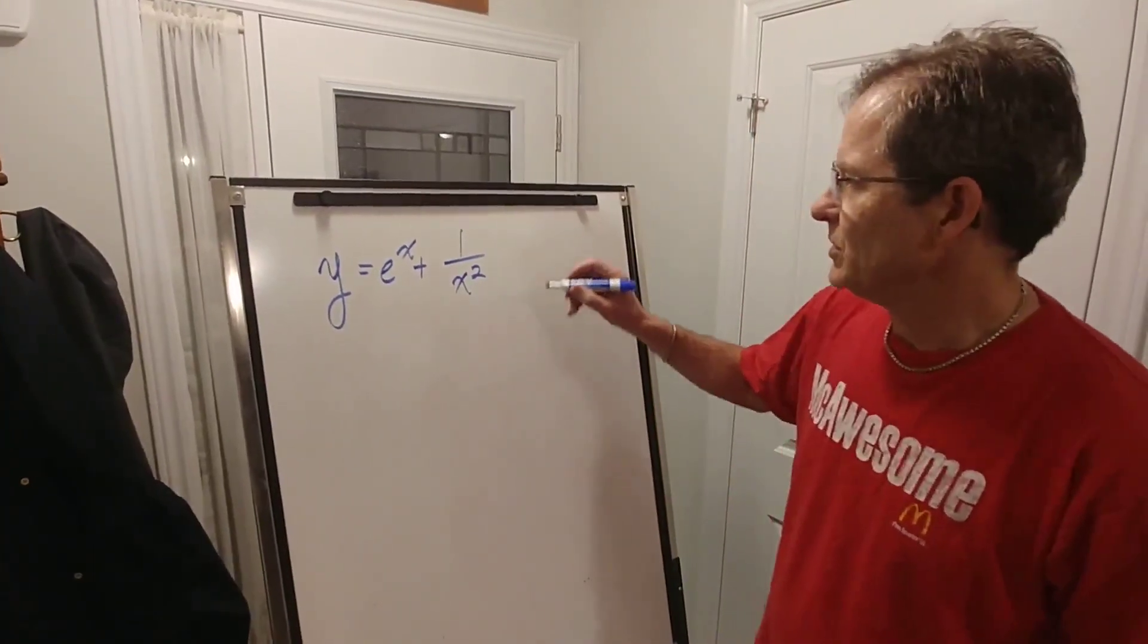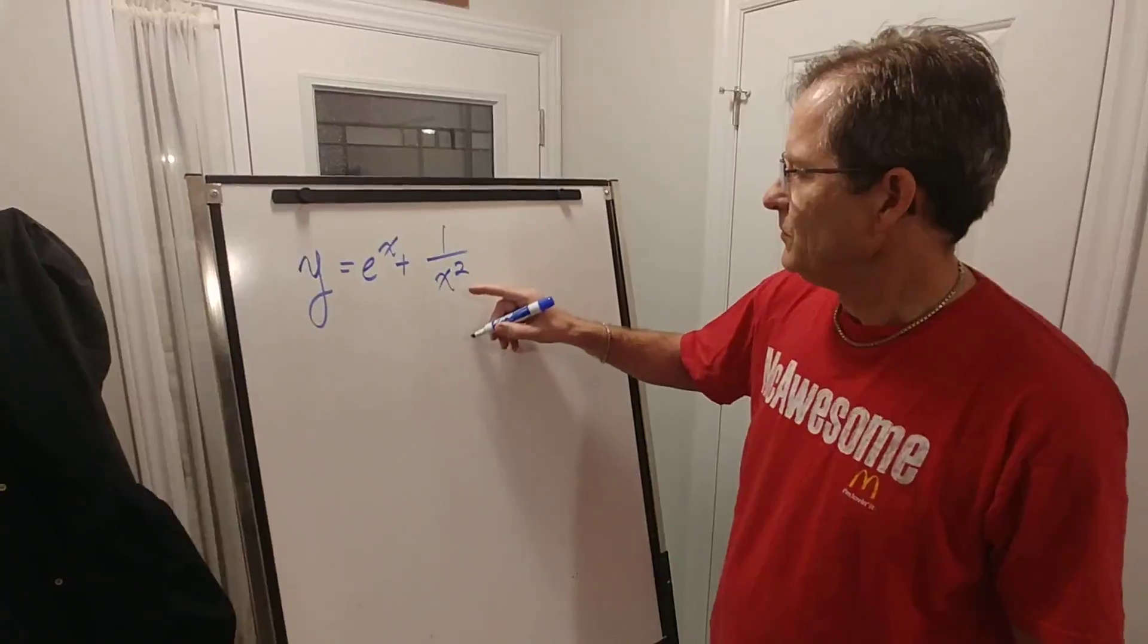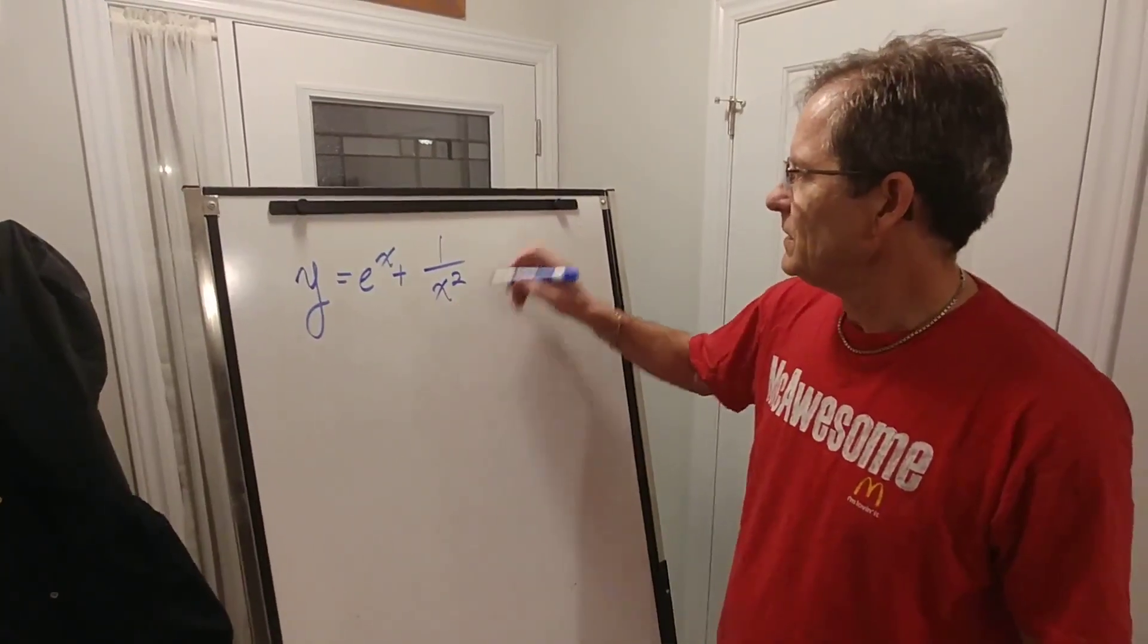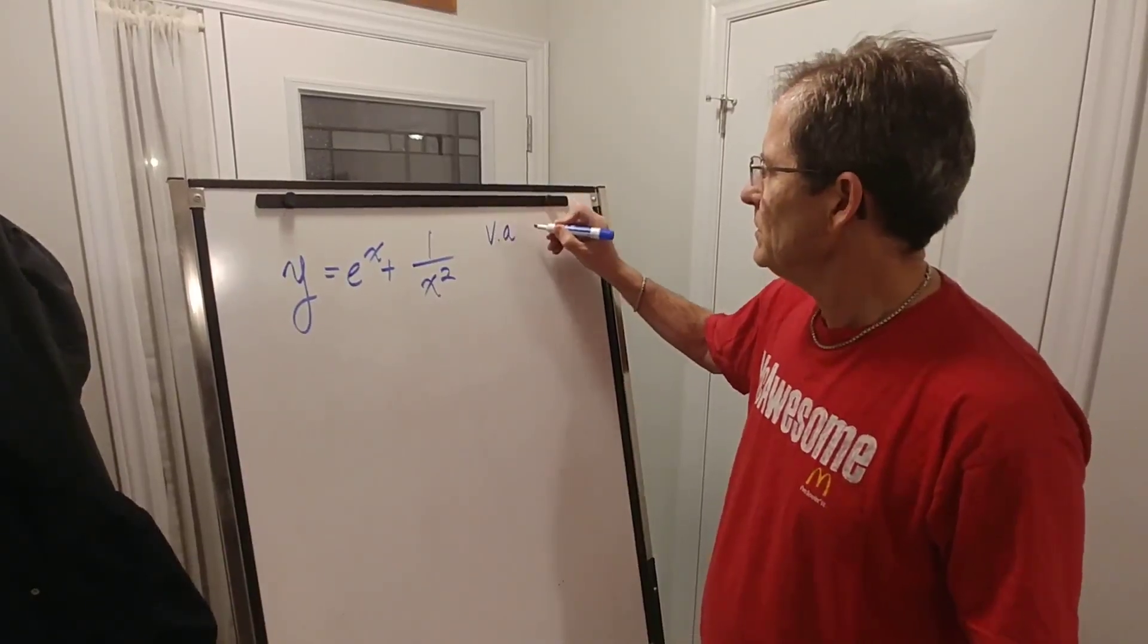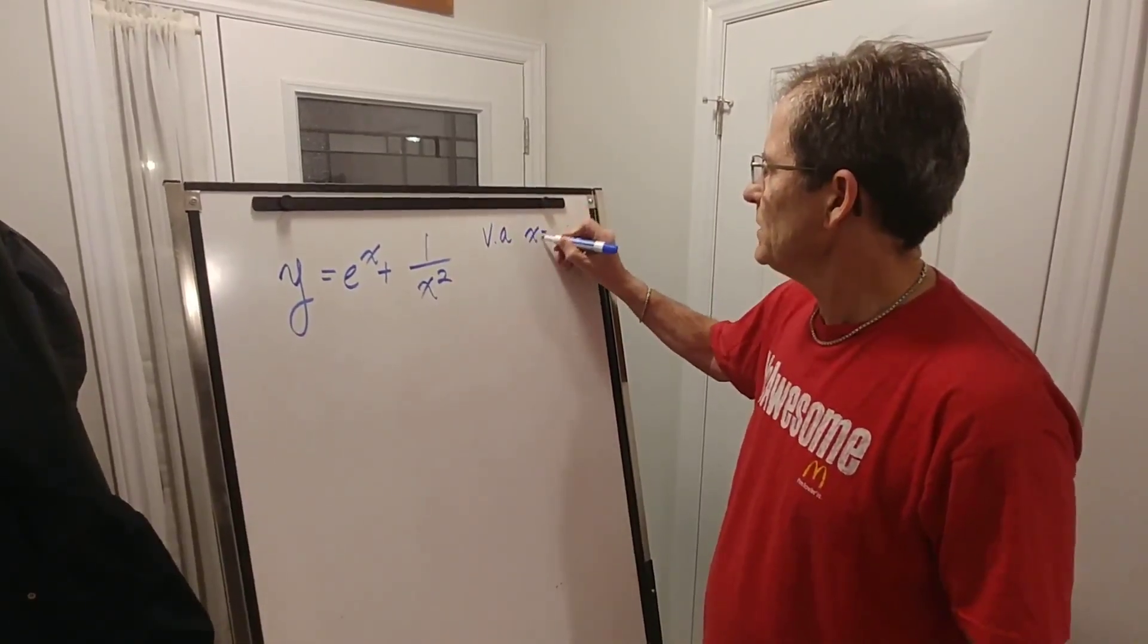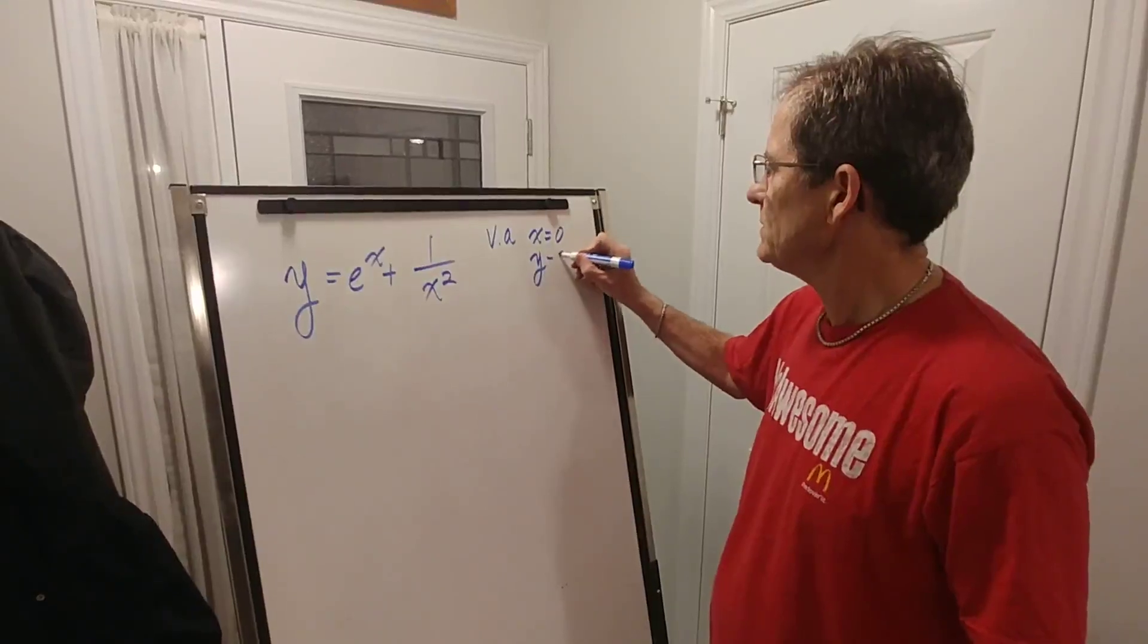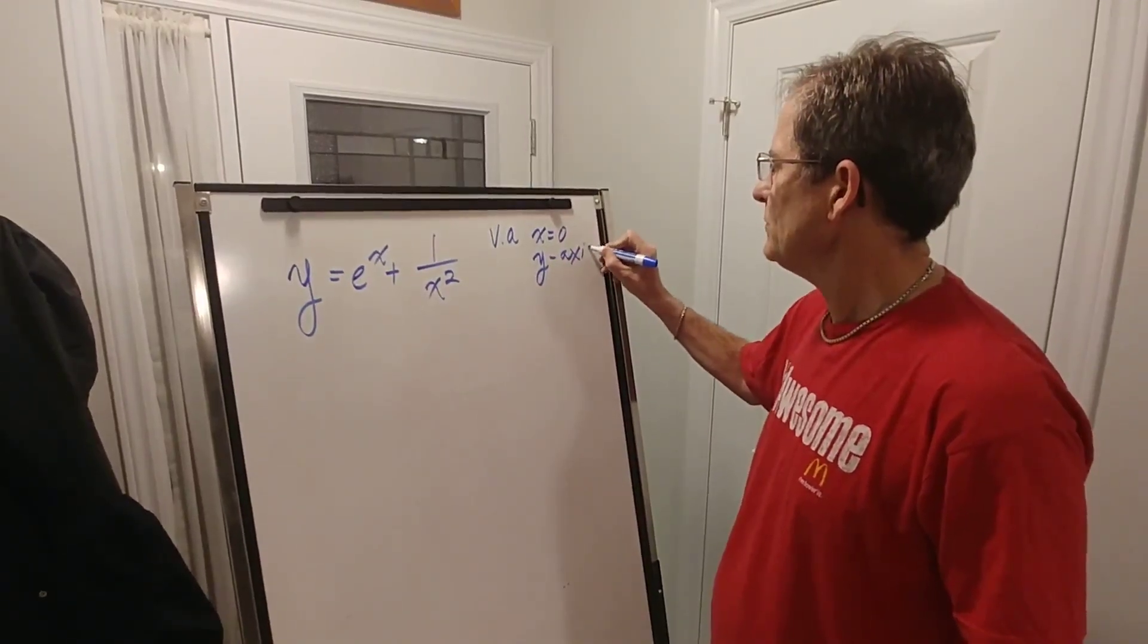Let's analyze this function. x can't be zero, so there's a vertical asymptote when x equals zero, which is the y-axis, so the graph will go to infinity there.